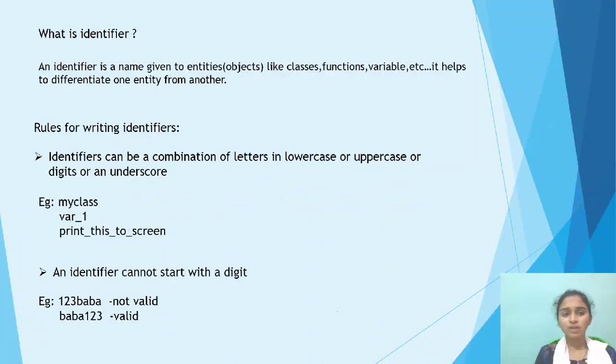First of all, what is an identifier? An identifier is a name given to entities like classes, functions, variables, etc. It helps to differentiate one entity from another one. It is called an identifier.